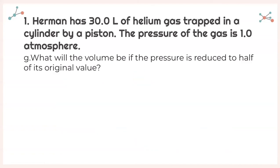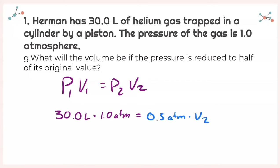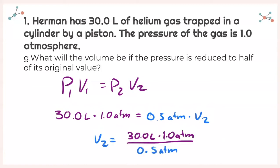Next, what will the volume be if the pressure is reduced to half of its original value? Same equation: P1 times V1 equals P2 times V2. Our pressure goes from 1 atmosphere to 0.5 atmospheres. Solving for V2 and plugging into my calculator, I end up getting 60.0 liters.